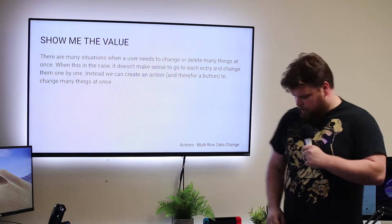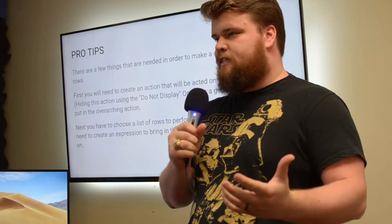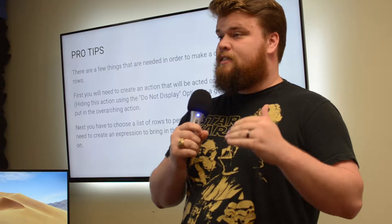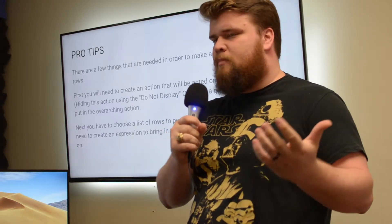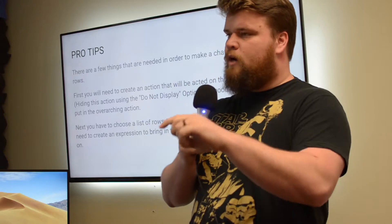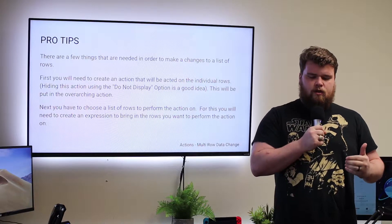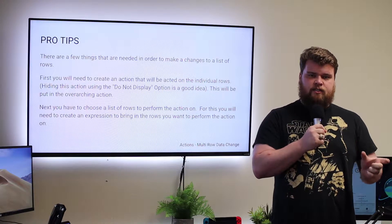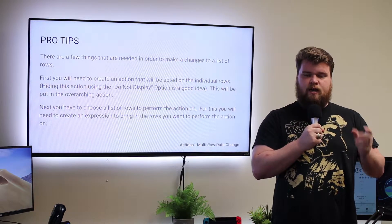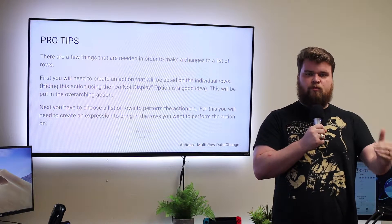In order to do this you need two things. First, you need the action you're going to commit on the individual rows. For instance, you have a project table with a column called status — that status might be on hold until the customer gives you the go-ahead. Once they do, you want to hit one action that changes every project associated with that customer to the new status. So you need two pieces: the action that changes the data in each individual row, and the action that chooses which rows to perform that first action on.